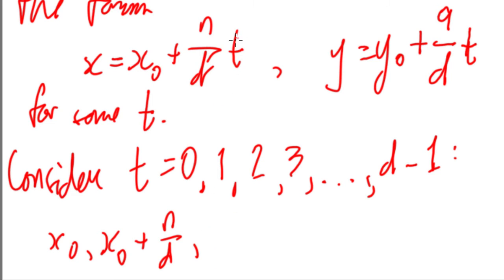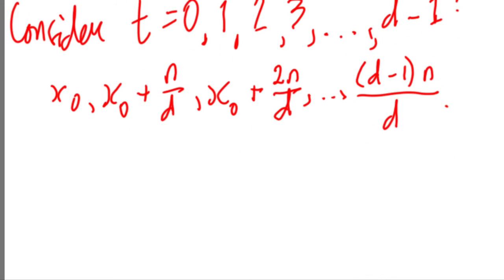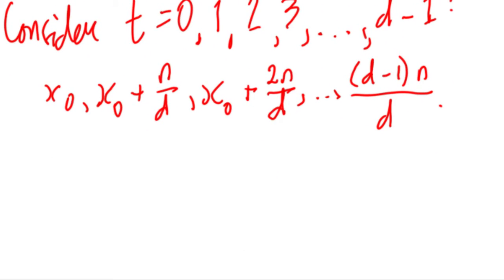if t is 2, then this is going to become 2, therefore we have x sub 0 plus 2n over d. And this goes on until we'll reach d minus 1, so d minus 1 times n over d. Now we claim that these integers are incongruent modulo n and all other such integers x are congruent to some of one of them.